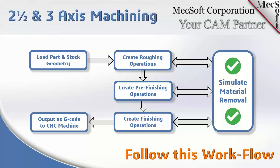We're going to start in the top left corner. You're going to load your part, find your stock geometry, and define your setup — everything you need to start programming the part. Moving the arrow to the right, at the very top we see three balloons in the middle: create roughing operations, create pre-finishing operations, and create finishing operations. Depending on your part, you may not need a pre-finishing — you may just need a finishing.